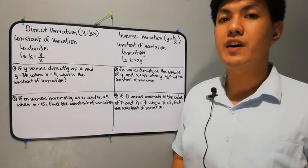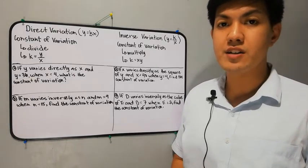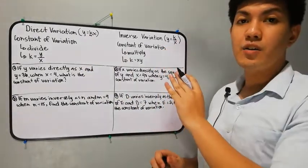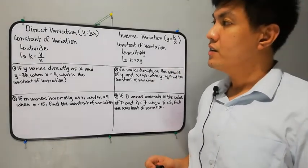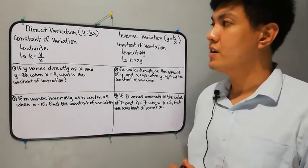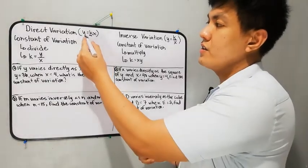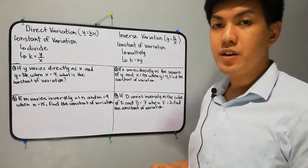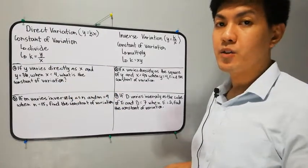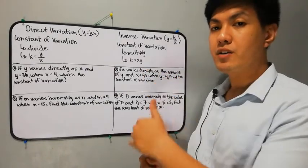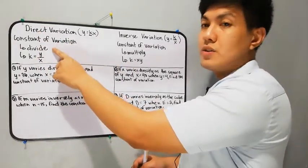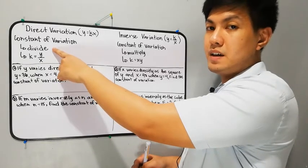Let's have the constant of variation for direct and inverse variation. The constant is denoted by k, so the k in each equation is the constant. The question is: how are we going to solve or identify the constant of variation? For direct variation, y is equal to kx. In order to get the constant, we have to divide the two variables.